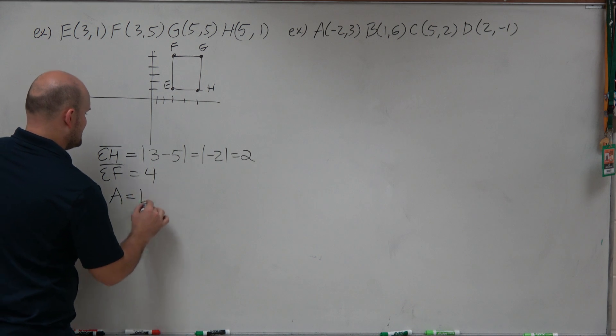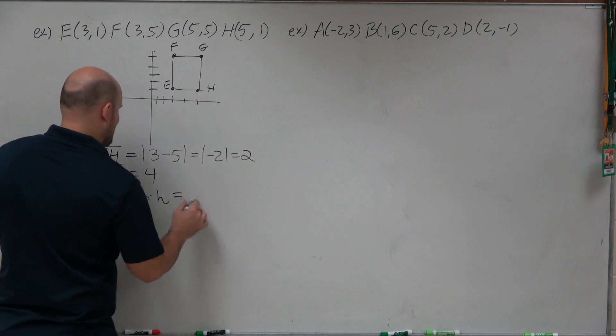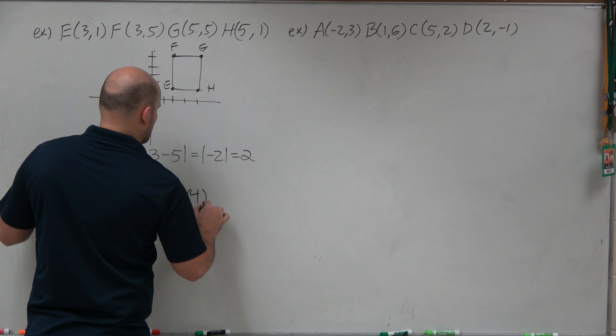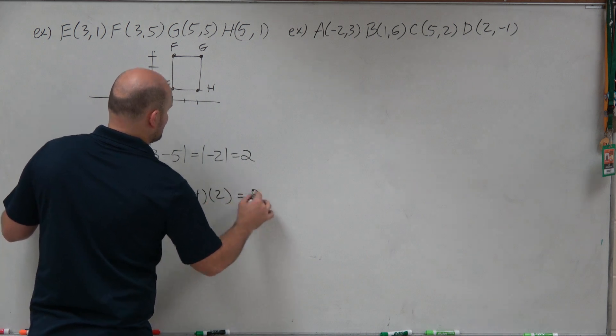So therefore, the area of a rectangle is base times height. In that case, it's going to be 4 times 2, which is equal to 8.